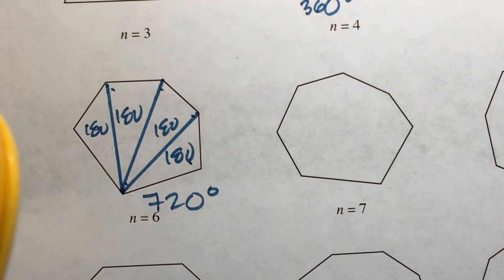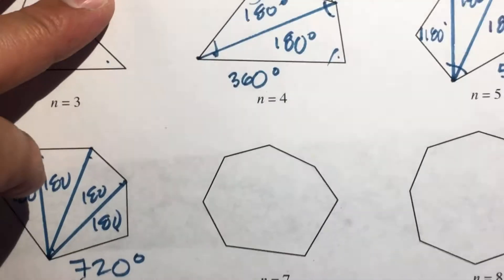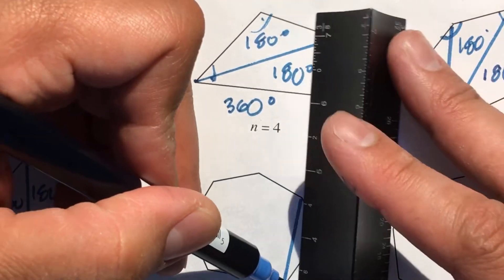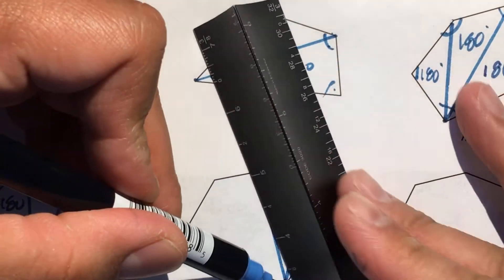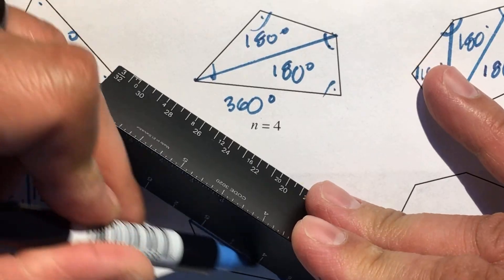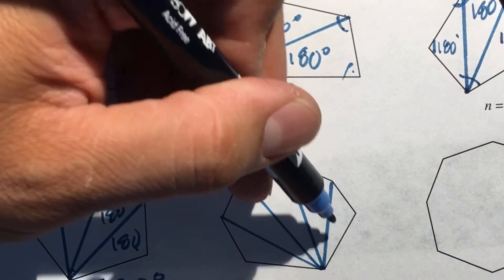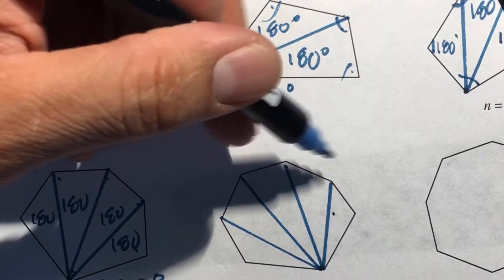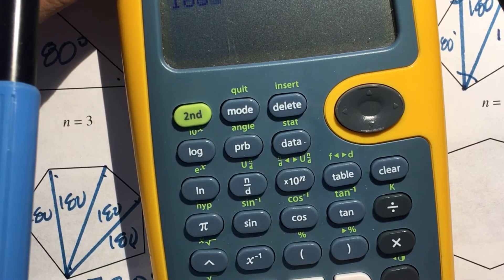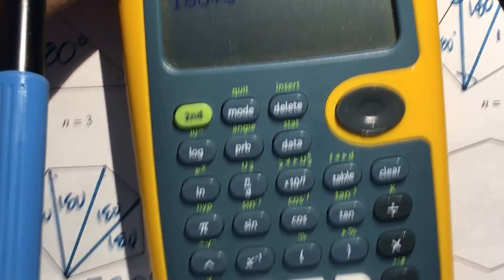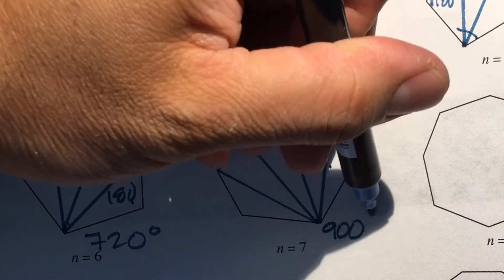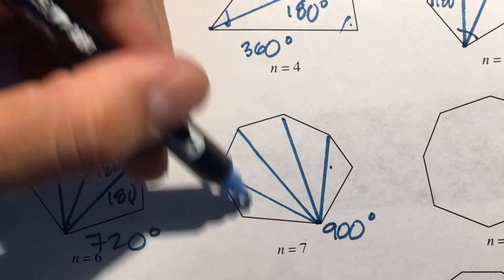We're going to do one more just so you get the point. Drawing lines: one, two, three, and four — that creates five triangles for this seven-sided, seven-angled shape. So 180 times 5 is 900 degrees for these five triangles.